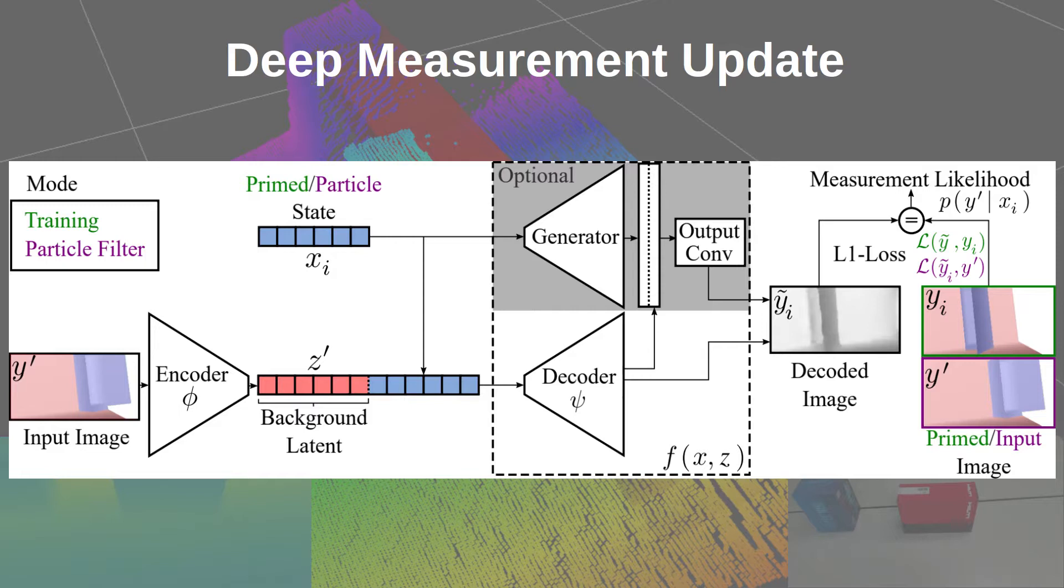Deep measurement update as a general update rule for a wide range of systems. Deep measurement update has a conditional encoder-decoder neural network structure to process depth images.